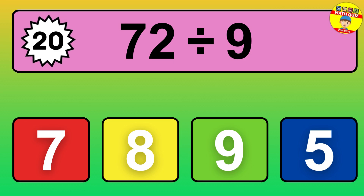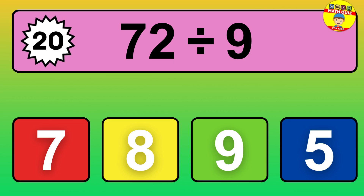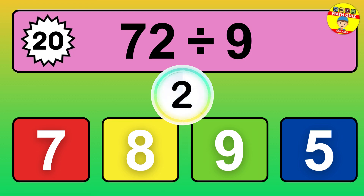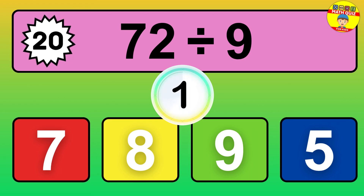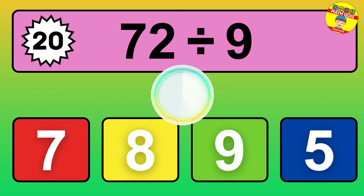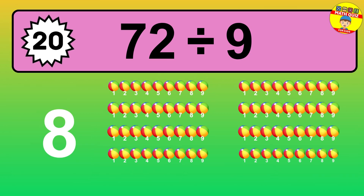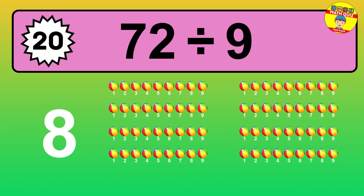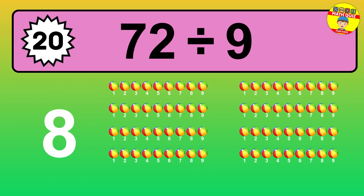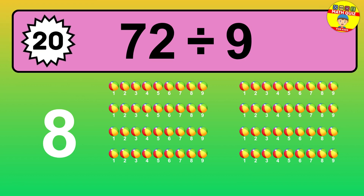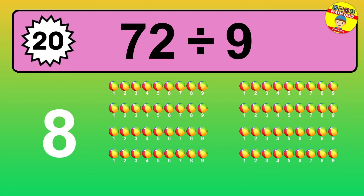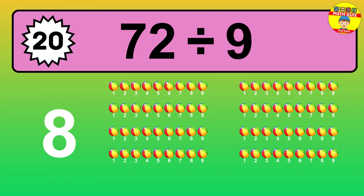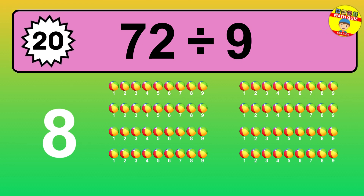What is 72 divided by 9? Picture this: you have 72 objects to divide into groups of 9. How many groups can you make? Let's think about it. Ready to find out? Let's break it down. Imagine you have 72 objects. Now think about splitting them equally into smaller groups of 9.